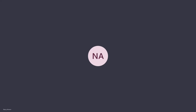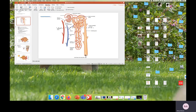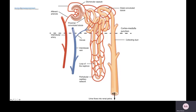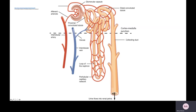In the last section we started to talk about the nephron, which we will continue to discuss. When you look at the nephron, you're going to see this C-shaped structure — that is what's known as the glomerular capsule, also known as Bowman's capsule. You will also see this knot of capillaries known as the glomerulus. The glomerular capsule surrounds the glomerulus, and together they are known as the renal corpuscle.